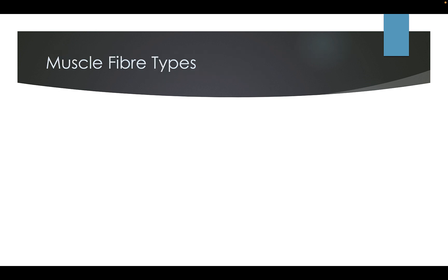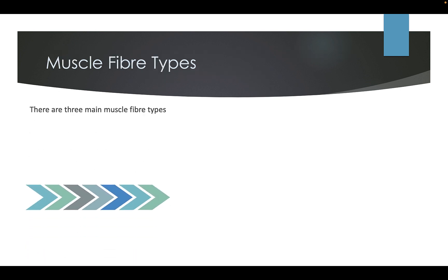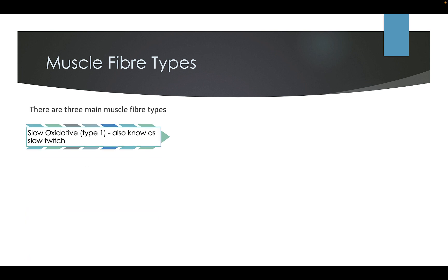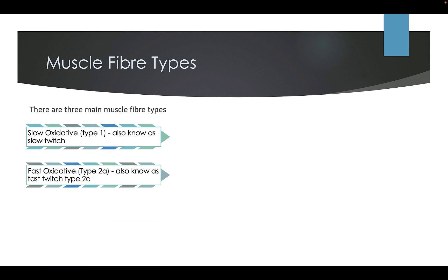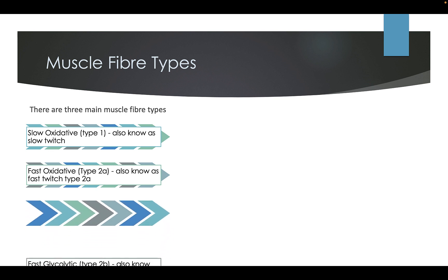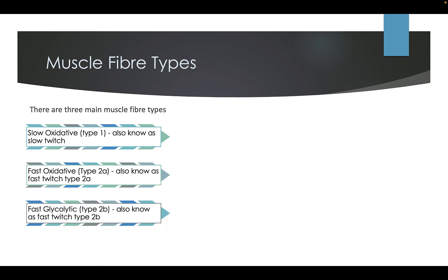Muscle fibre types. There are three main muscle fibre types: slow oxidative, also known as slow twitch; fast oxidative, also known as fast twitch Type 2A; and fast glycolytic, Type 2B, also known as fast twitch Type 2B.